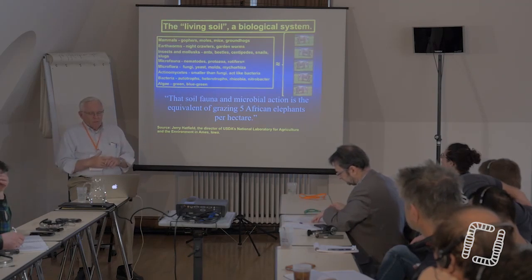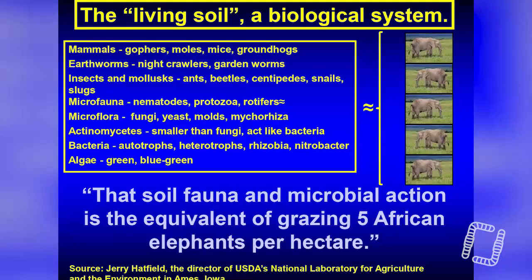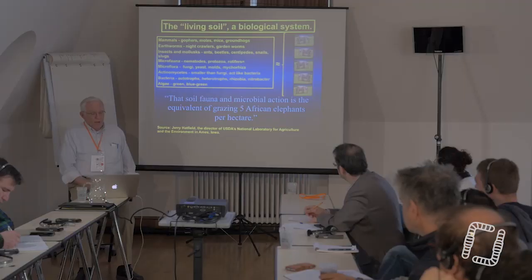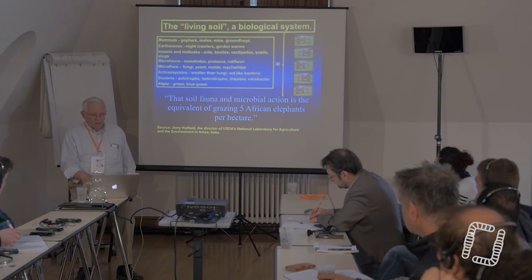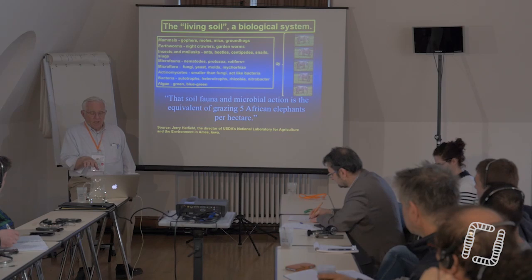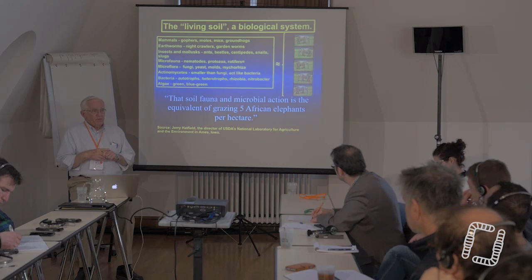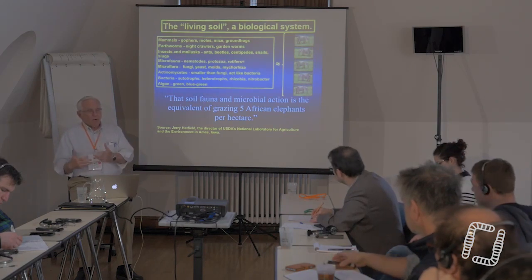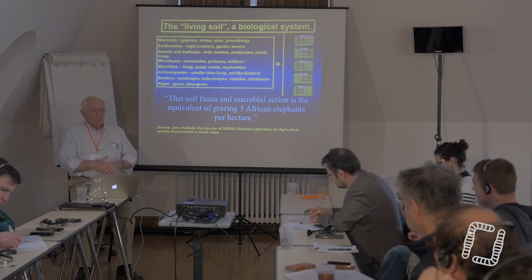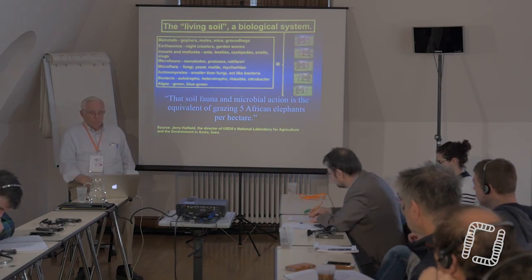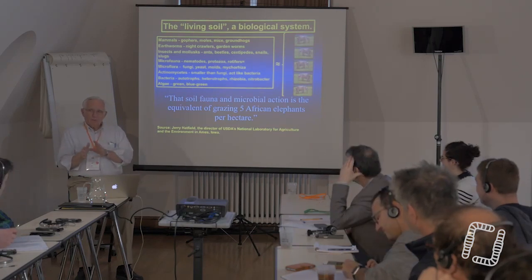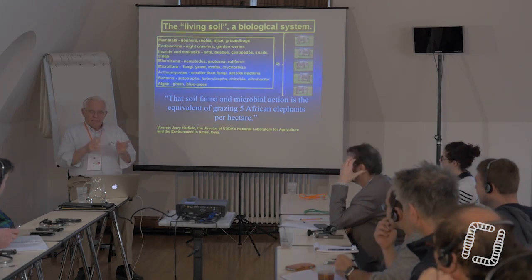This living soil is a biological system that contains critters including mammals, earthworms, insects, slugs, microflora, actinomycetes, bacteria, and algae. If you add up the effect of those requiring carbon nutrition, it's the equivalent of five African elephants per hectare feeding on the energy that goes in through the carbon system. Those five African elephants, taking about 150 kilos of hay a day, illustrate how much carbon must come into that system to maintain a healthy biological population. This is one of the reasons why, even doing cover crops and growing two crops a year, we cannot get enough carbon into the system to bring it back to optimum.